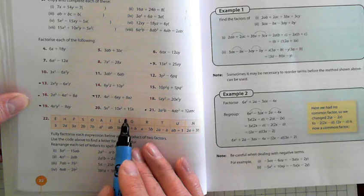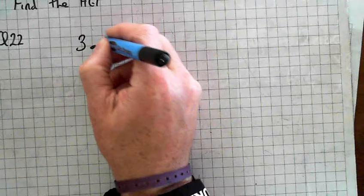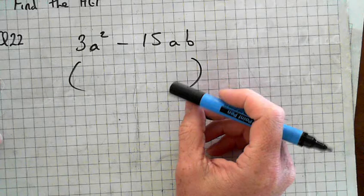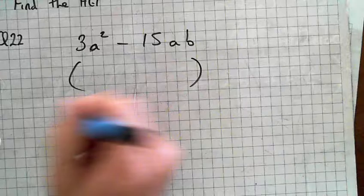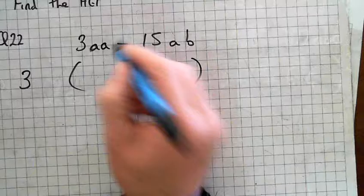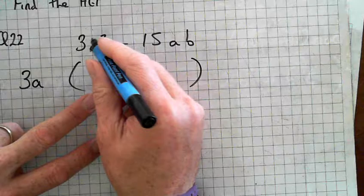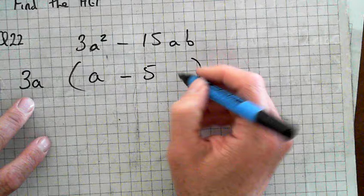So. For example. Question 22. If you look at. It has a set of letters here. But. What we'll do is. We'll find the factors. And then we'll look up the reference here. And then we'll find the letters. Okay. So. The first one. For example. 3a squared minus 15ab. So. We'll factorize it first. Find the factors. Look in this way. Again. Look in this way. The highest number divides into 3 and 15 is 3.